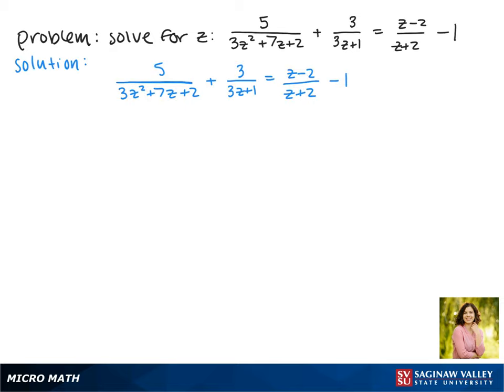The first thing we want to do is factor that trinomial in the denominator. Now 3 times 2 is 6, and the factors of 6 that will make 7 are 6 and 1. So here we're using the grouping method. This is just a quick demonstration. We will get (3z + 1)(z + 2).